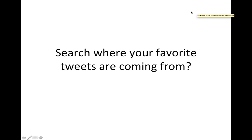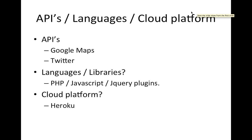Search where your favorite feeds are coming from. This is my mashup. I used Google Maps APIs and Twitter APIs, and for the languages I used PHP, JavaScript, and some jQuery plugins. This entire mashup is being deployed on the Heroku Cloud Platform.